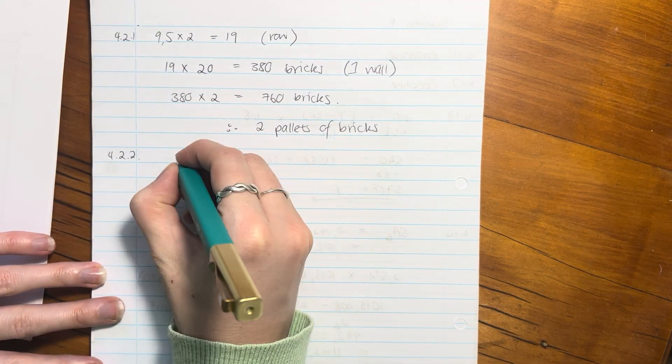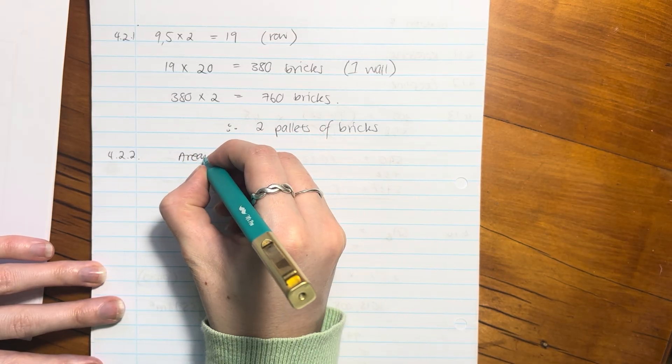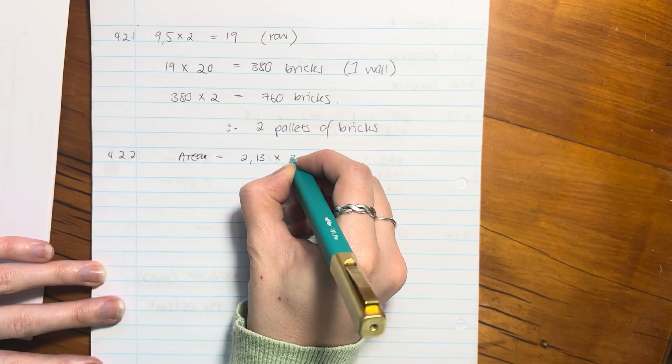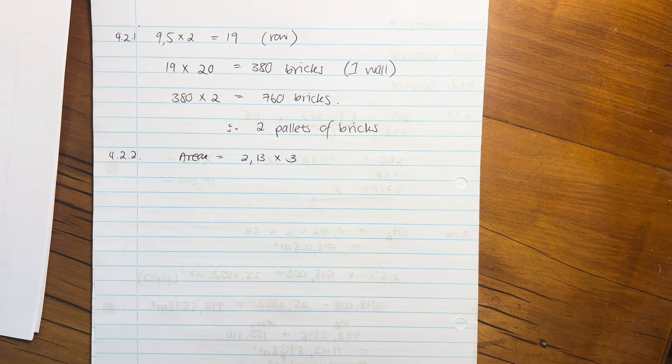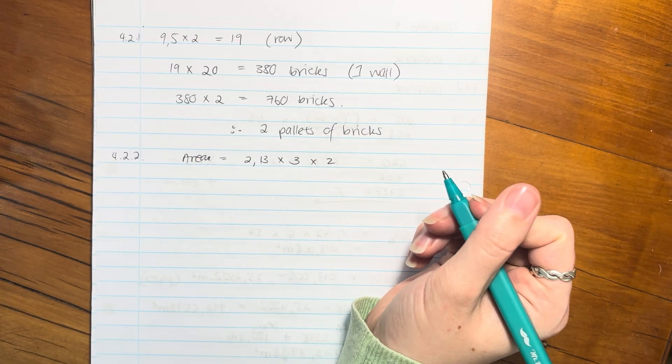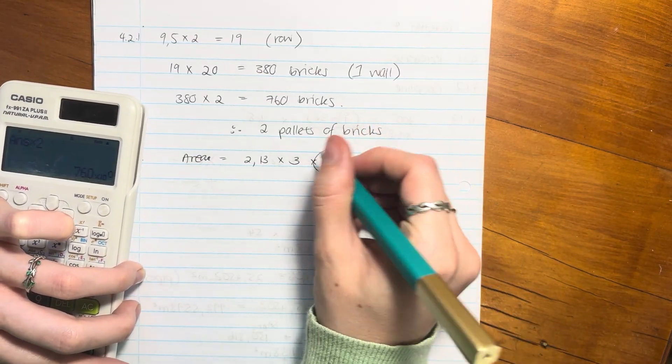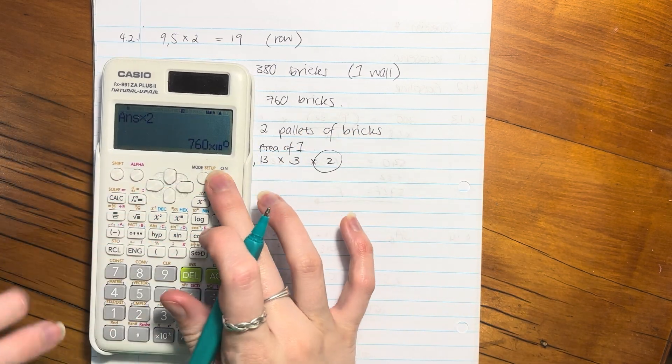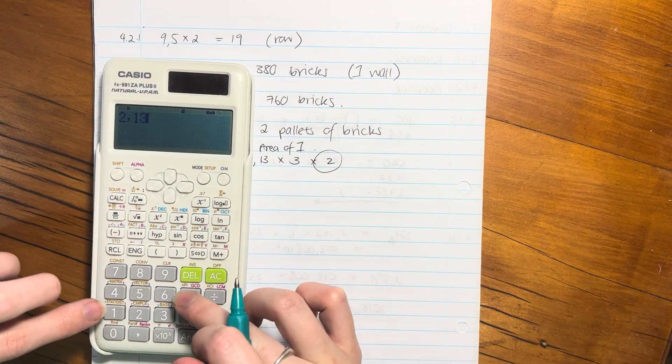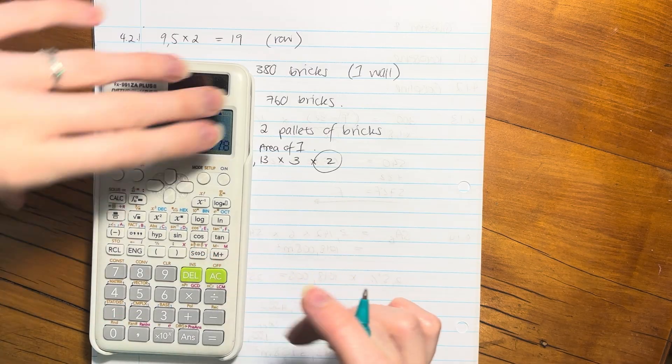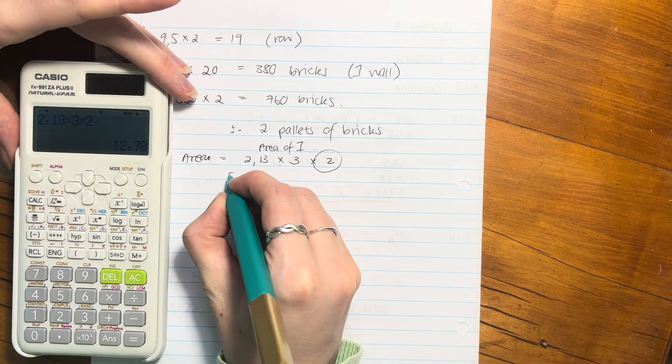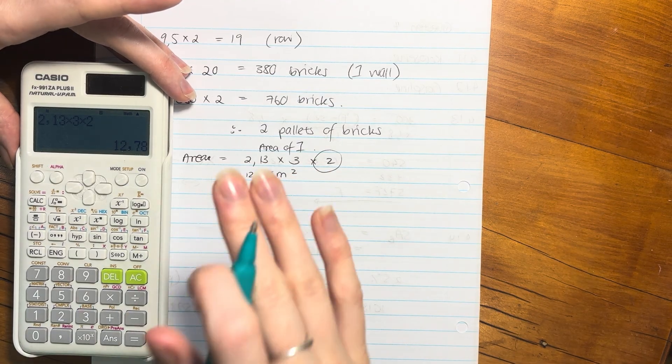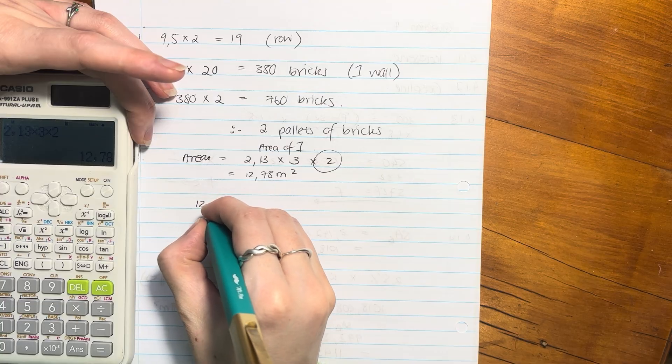They've given us a formula for area, we know we're going to need that because we need to work on our square meters. The area is going to be 2.13 times 3, but please remember we also have to times that by 2 because there's two walls. So 2.13 times 3 times 2, and that's 12.78 meters squared.